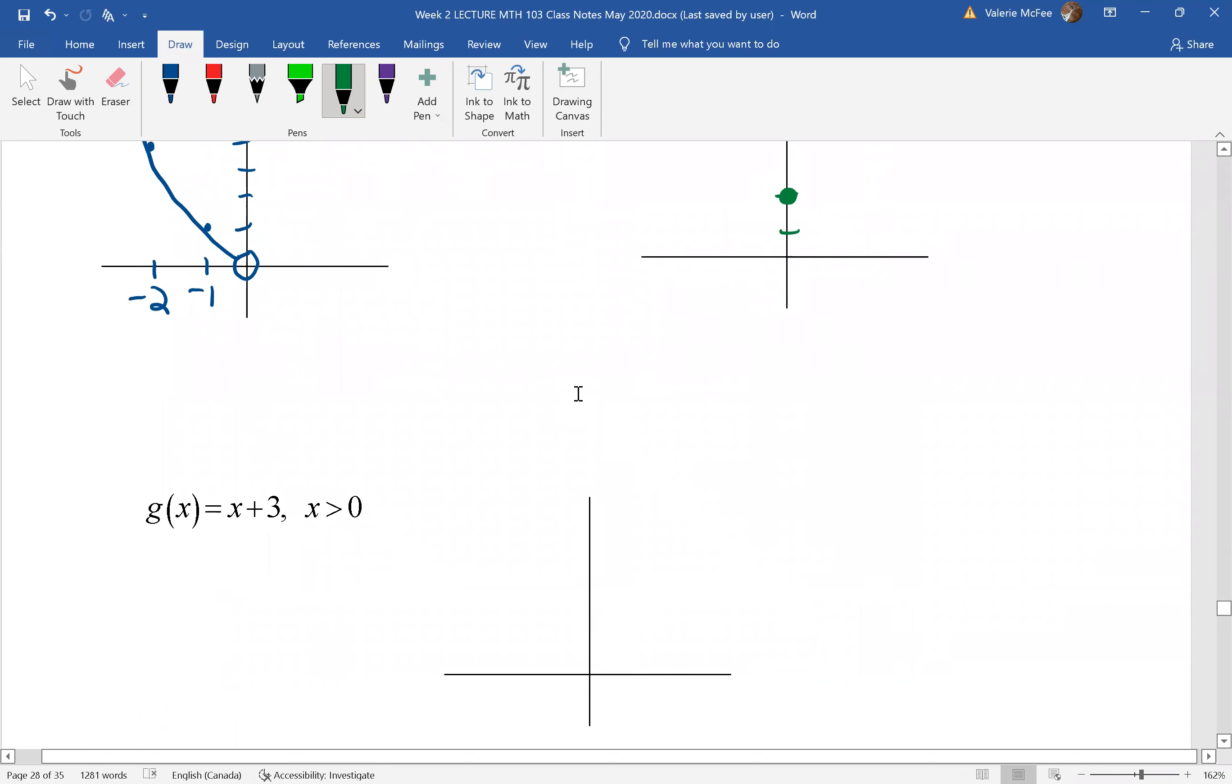In the third piece, we're looking at x plus 3 where x is greater than 0. Again, we had an endpoint at (0,3).